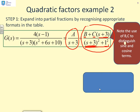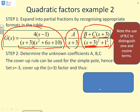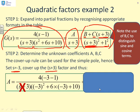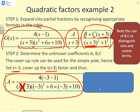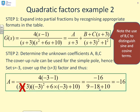What do we do next? The first thing is to get a using the cover-up rule — set s = −3 and cover up the (s+3) factor. Writing out G(s) with s = −3 substituted in (and the s+3 covered up) gives a = −16. So a equals minus 16.